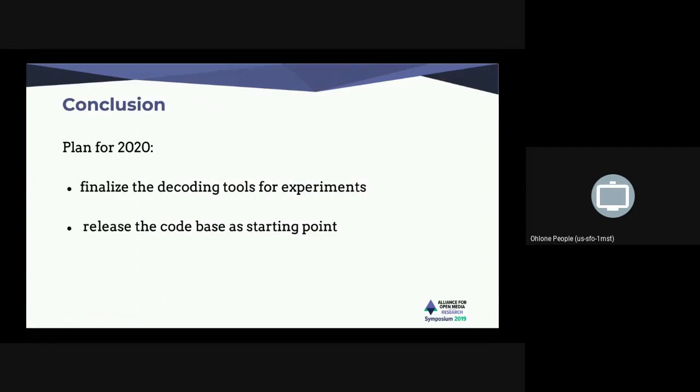The plan for WebP V2: we'd like to finalize the decoding tools we have. We have a lot of new things, and at some point we want to draw the line and decide which tools are promising — maybe not all of them, like floating partitioning is still uncertain, but it seems to work. Then we'll work on the encoder. We have an experimentation codebase ready and want to release it as soon as possible so people can have a look. It was supposed to be open-sourced from the start.